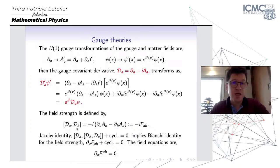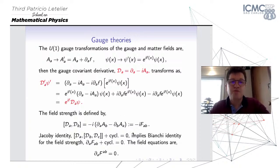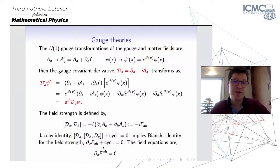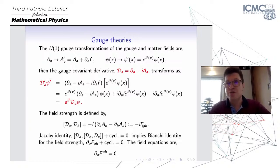For example, the commutator of two covariant derivatives defines the field strength. Since we are talking about U(1) gauge field — Maxwell electrodynamics — it will be an abelian U(1) field strength, which is gauge invariant (for Yang-Mills it is gauge covariant). The Jacobi identity for the gauge covariant derivatives implies the Bianchi identity for the field strength, which is in fact the second pair of Maxwell equations. Using the field strength we construct the gauge invariant action, from which we derive the gauge covariant equations of motion — the first pair of Maxwell equations.